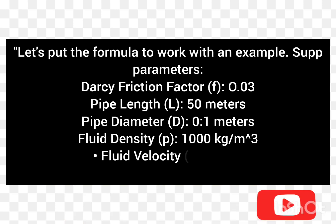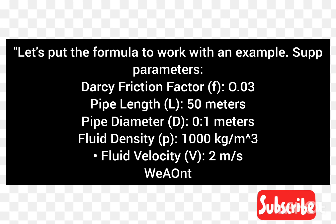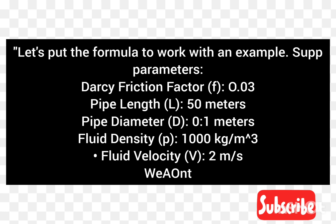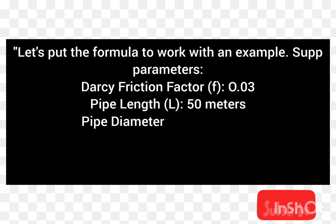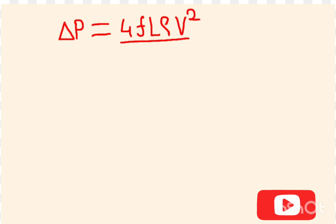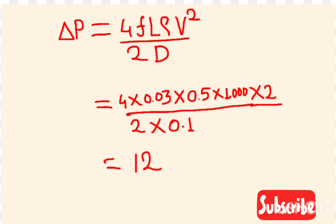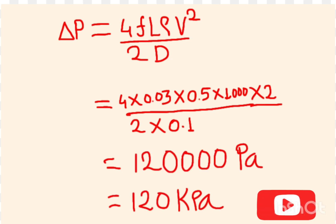Let's put the formula to work with an example. Suppose we have a pipe with the following parameters: Darcy friction factor F equals 0.03, pipe length is 50 meters, pipe diameter is 0.1 meters, fluid density is 1000 kg per cubic meter, and fluid velocity is 2 meters per second. We want to calculate the pressure drop from point A to point B. By putting these values into the Darcy equation, the final answer is 120,000 Pascals.